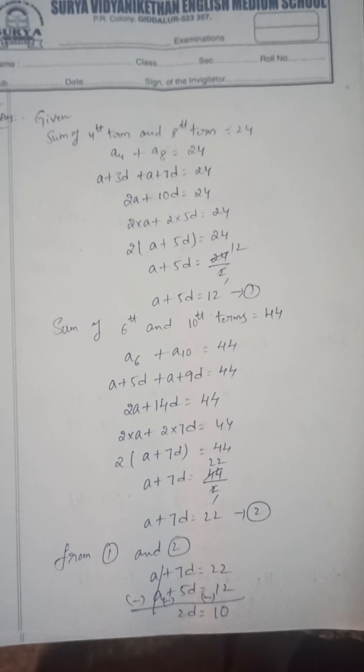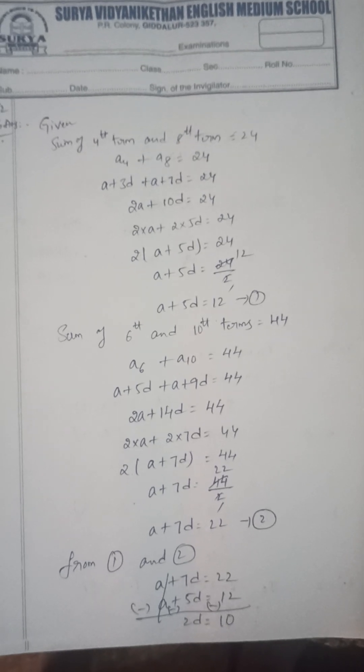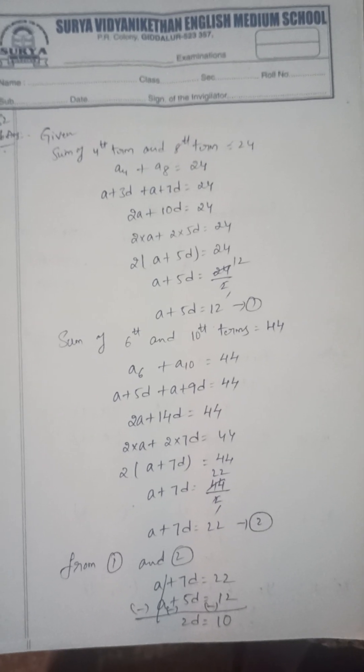Sum of fourth term and eighth term is 24. Sum of sixth term and tenth term is 44. Find the first three terms. First term is -13, second term is -8, third term is -3.